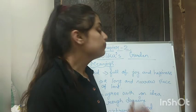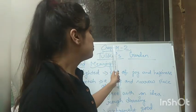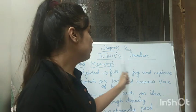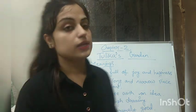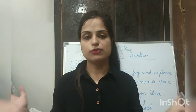So now what you have to do is write chapter number 2, Tulika's Garden word meanings in your English copy. Tomorrow we will read the chapter and I will explain how Tulika decorated her beautiful garden.